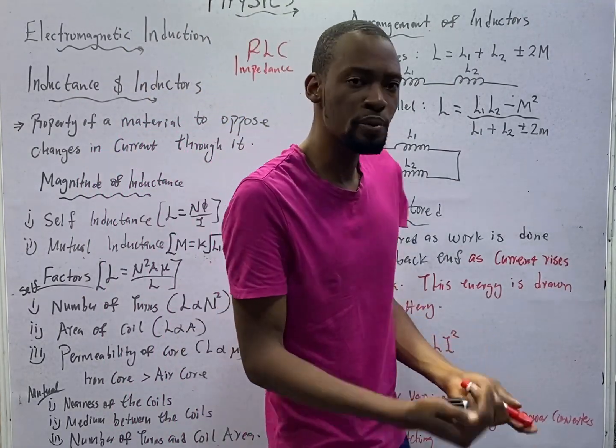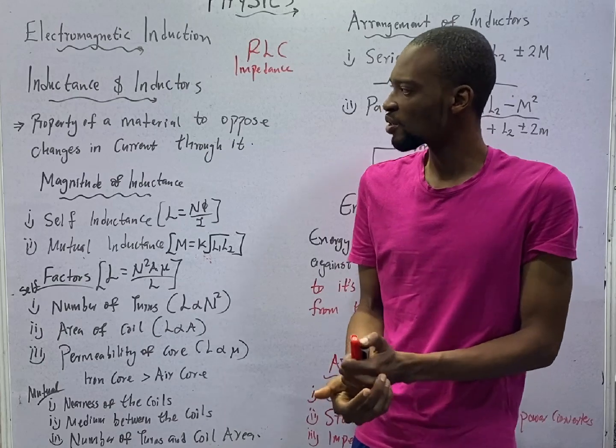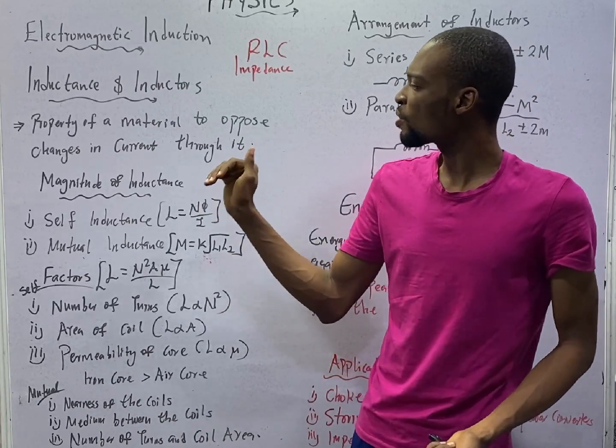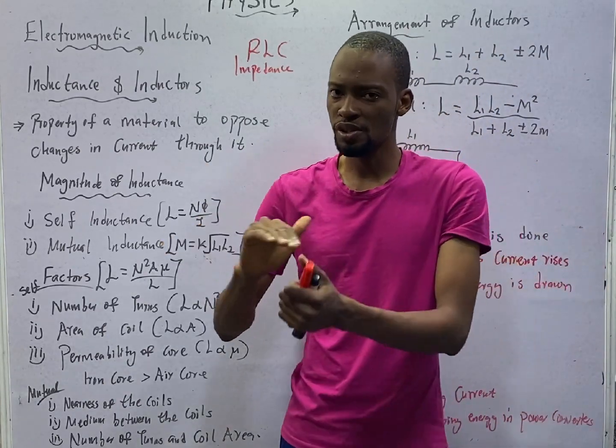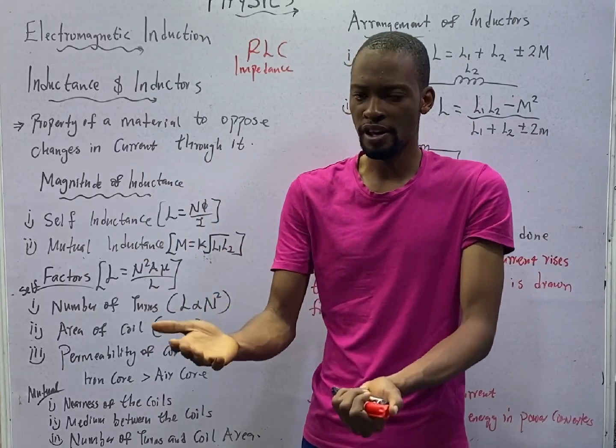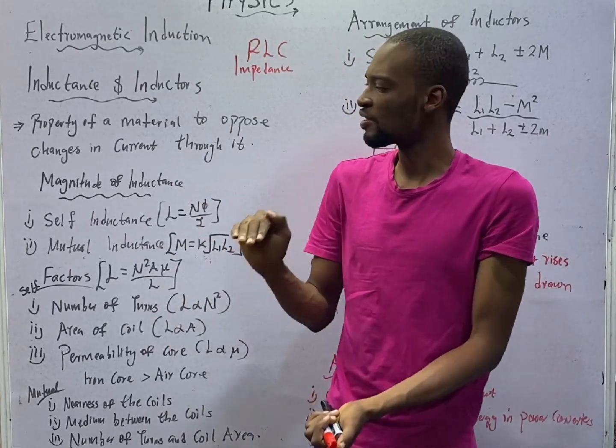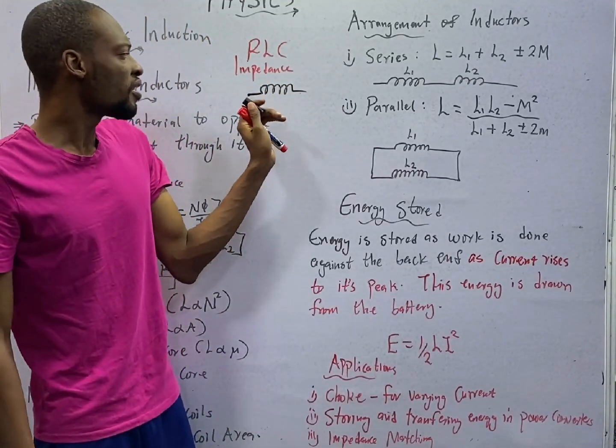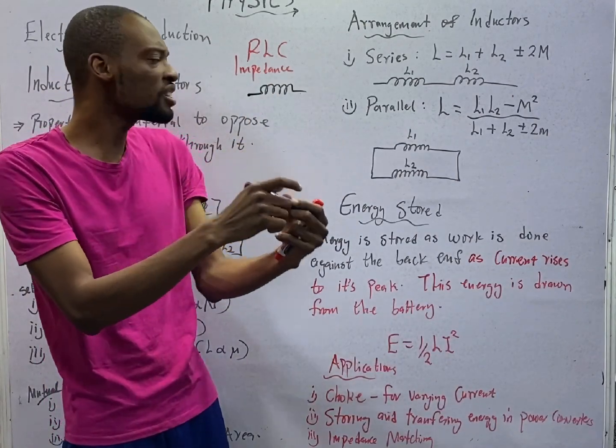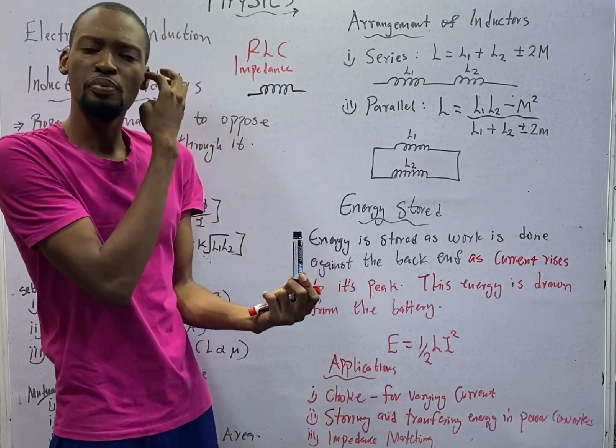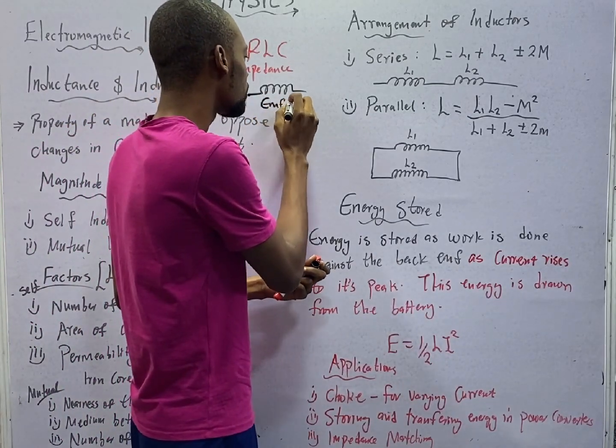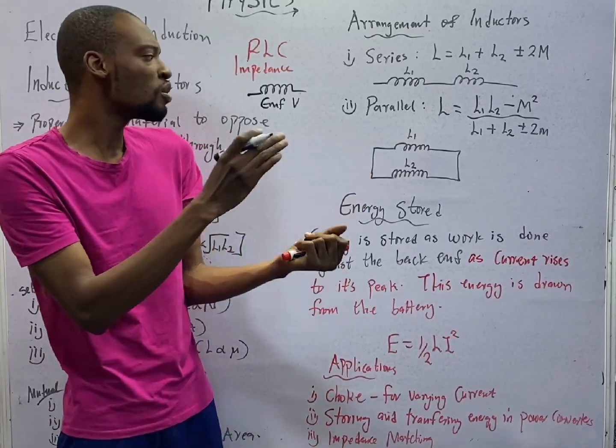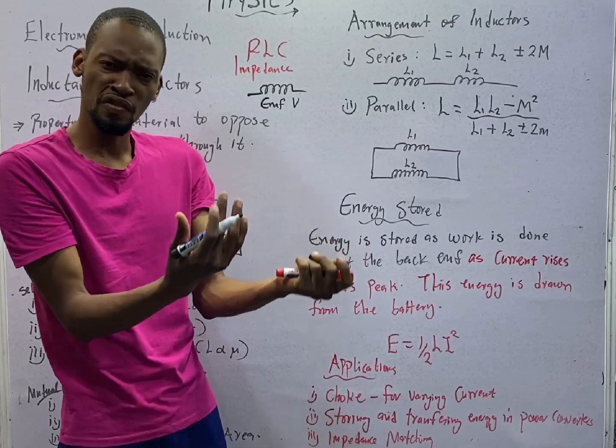So, what is then the simple explanation for inductors or inductance? Inductance is the property of a material to oppose changes in current to it. So, they can oppose the flow of current or the change in current that is flowing through it. If this is a coil, the rate of change of current flowing in this coil produces EMF or voltage.